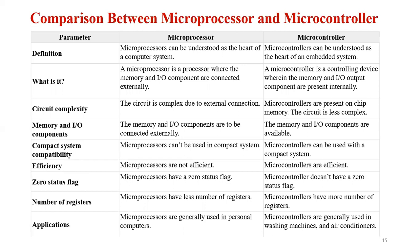A microcontroller contains the circuitry of a microprocessor and in addition has built-in ROM, RAM, input-output devices, timers, and counters. A microprocessor is a processor where memory and input-output components are connected externally, whereas a microcontroller is a controlling device wherein memory and input-output components are present internally. In terms of circuit complexity, the microprocessor circuit is more complex due to external connections, while the microcontroller with on-chip memory has less complex circuitry.